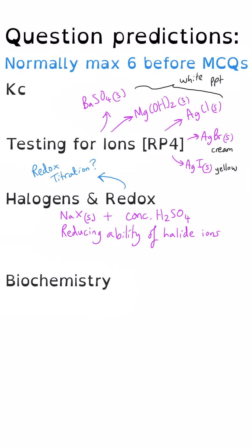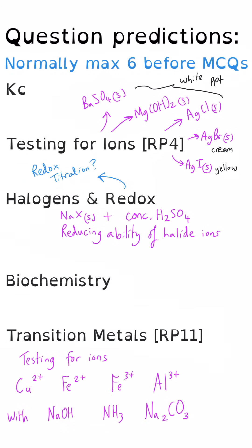There could also be a question about biochemistry, so maybe something to do with proteins or DNA or maybe both. And then my last prediction is the transition metals and testing for those ions. So we're talking about the different complexes, iron 2 plus, iron 3 plus, aluminium and copper, and how they behave when you add solutions of sodium hydroxide, ammonia and sodium carbonate, and the relative acidity of those different complex ions. Of the ones that I've listed here, I think KC and the transition metals are the least likely to come up, and so those others, those are my top tips, my highest priorities for things you should revise before paper 3.